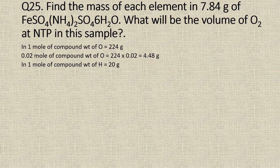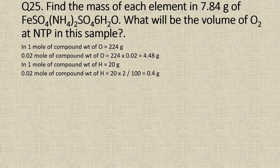Now, in 1 mole of the compound, the number of moles of hydrogen atoms is 20. Therefore, the weight of hydrogen atoms is 20 grams, and in 0.02 moles of the compound, the weight of hydrogen atoms will be 20 into 0.02, which is equal to 0.4 grams.